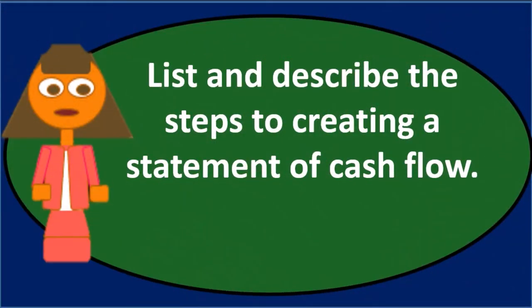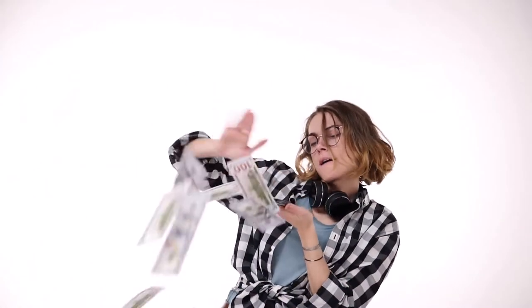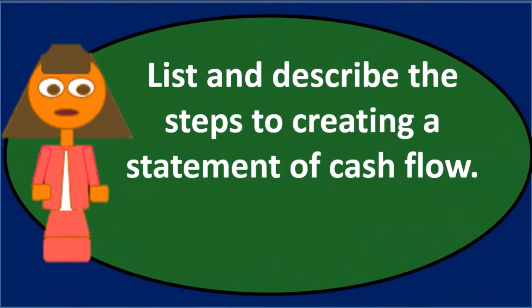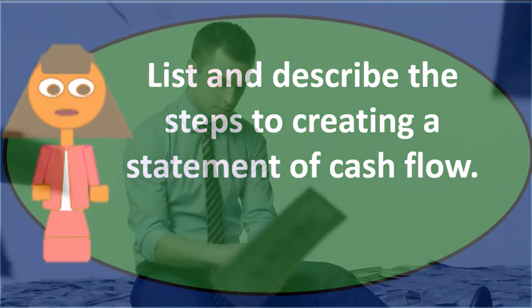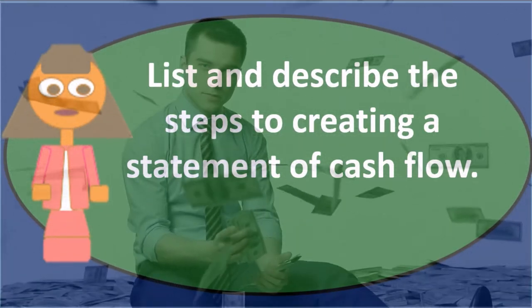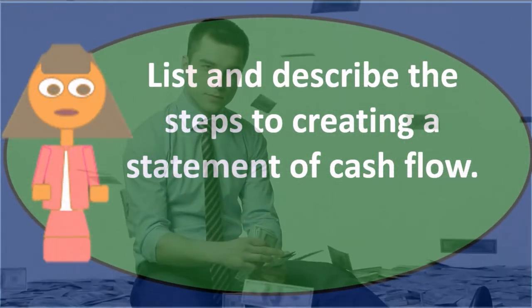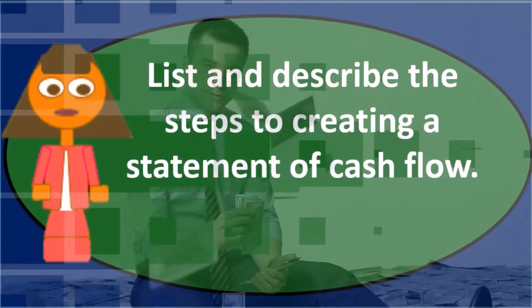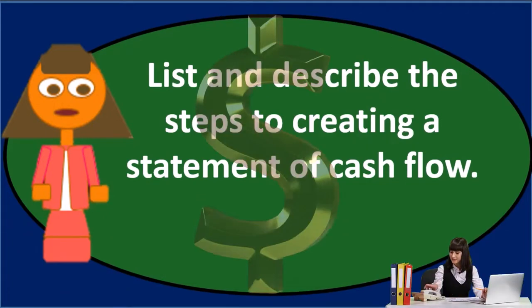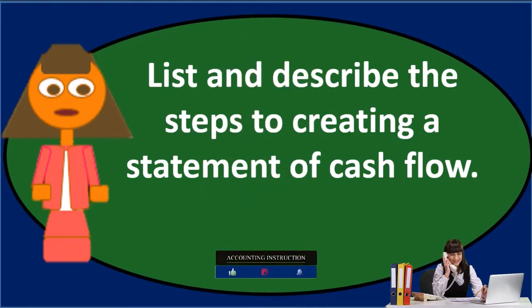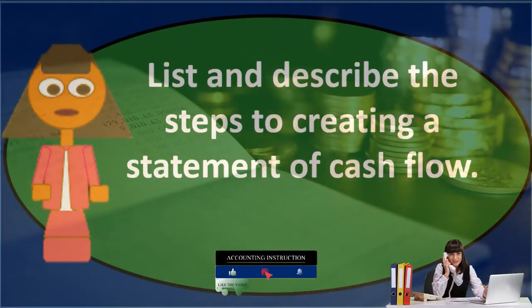To create the statement of cash flows, we're typically going to start by gathering the tools we need. We're going to make all other financial statements before the statement of cash flows — including the balance sheet, income statement, and statement of equity. We'll need the balance sheet, the income statement, and any added information, such as access to the general ledger, especially for accounts related to financing and investing activities.